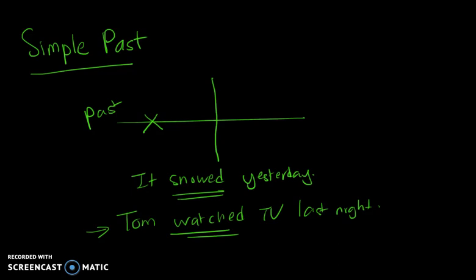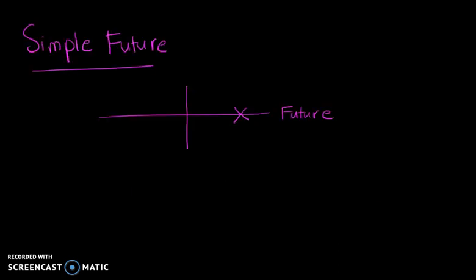We shall look at the third usage of the timeline diagram, which is the simple future. The simple future is exactly the opposite of simple past. You will see one mark over at the right side of the horizontal line.